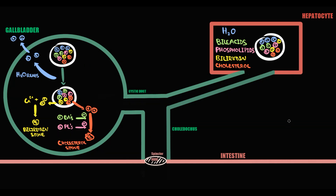The second reason why gallstones can be formed is decreasing bile acids level. With decreasing amounts of bile acids in the bile, there are fewer substances that inhibit cholesterol aggregation. So cholesterol aggregation becomes disinhibited, and as a result cholesterol stones will form more rapidly. Such stones can easily cause an obstruction in the cystic duct or in the choledochus.